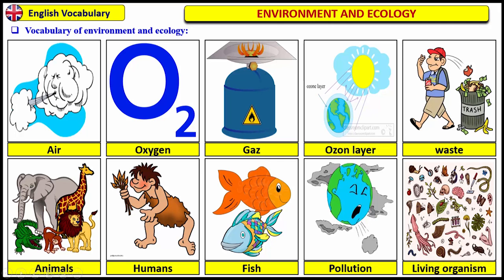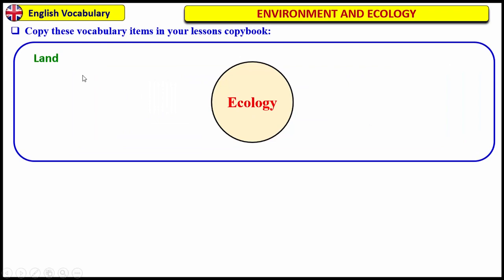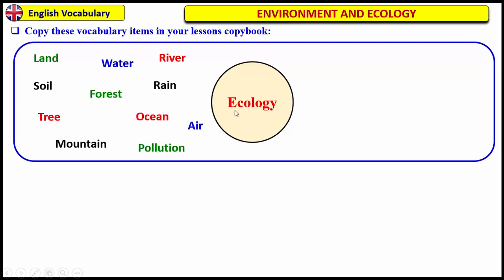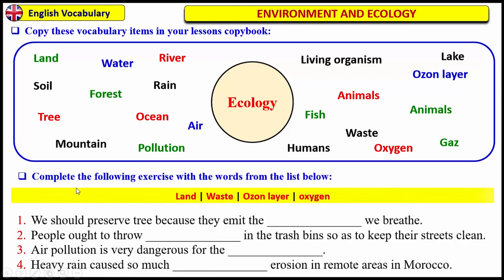All these words are related to ecology and environment. Now, go to your lessons copybook and write these vocabulary items. They are all related to ecology: land, soil, water, river, rain, air, pollution, ocean, humans, fish, living organisms, animals, waste, oxygen, gas, ozone layer, lake. Pause the video and copy this in your lessons copybook.